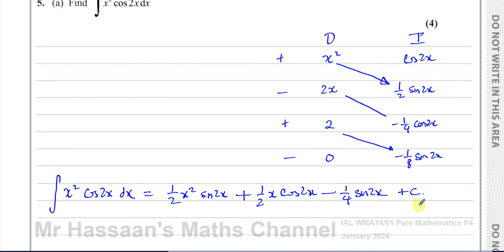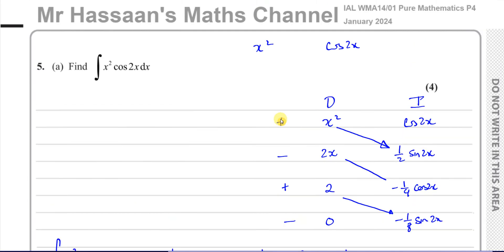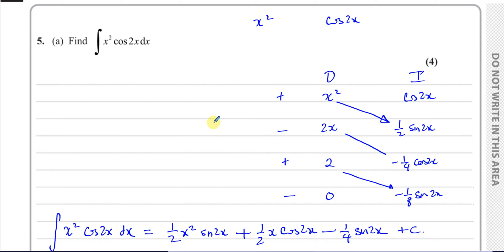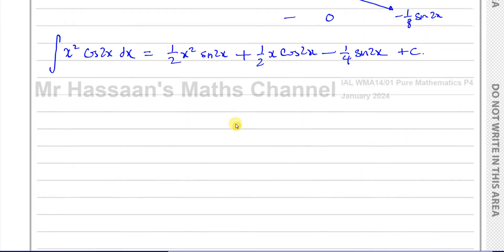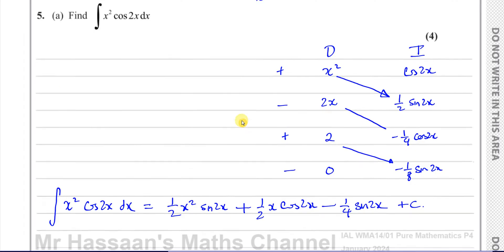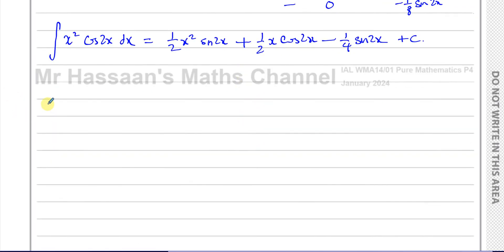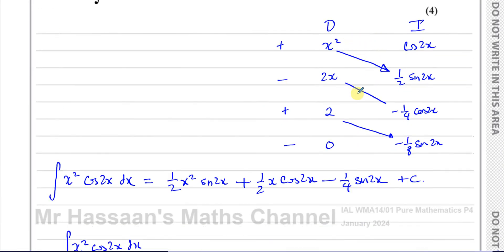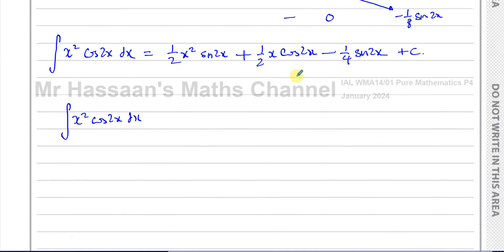Using this DI method really makes life much easier. I'm also going to show, for students not used to this method, how to do this using the traditional method of integration by parts. It's basically the same thing, just less user-friendly. With the traditional method, you choose one function and call it u — the one you differentiate — and the other you call dv/dx, which is the one you integrate.